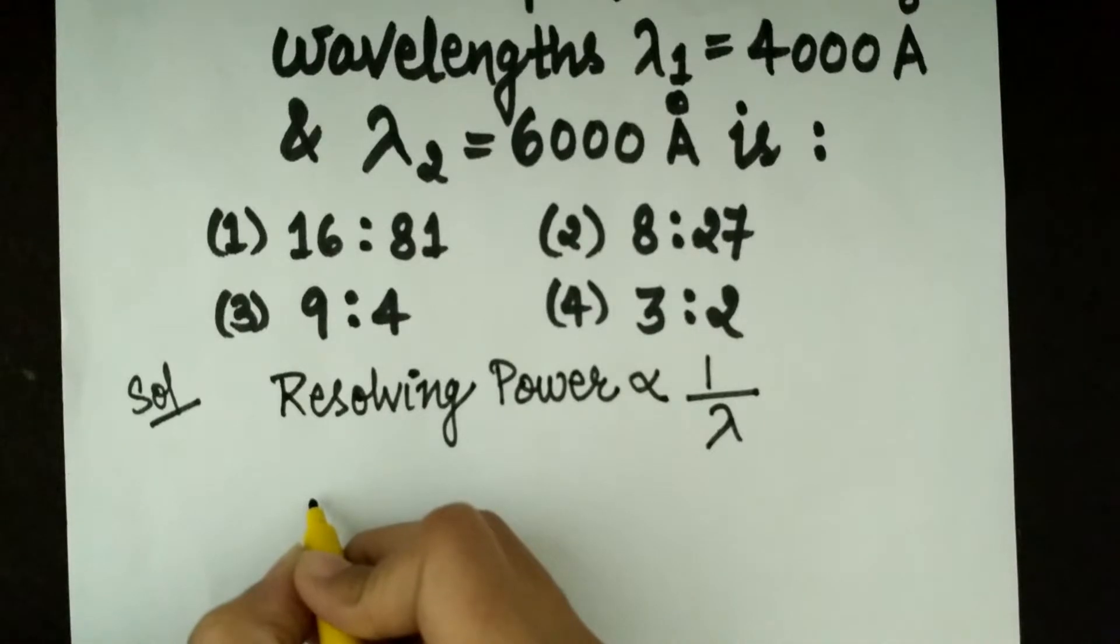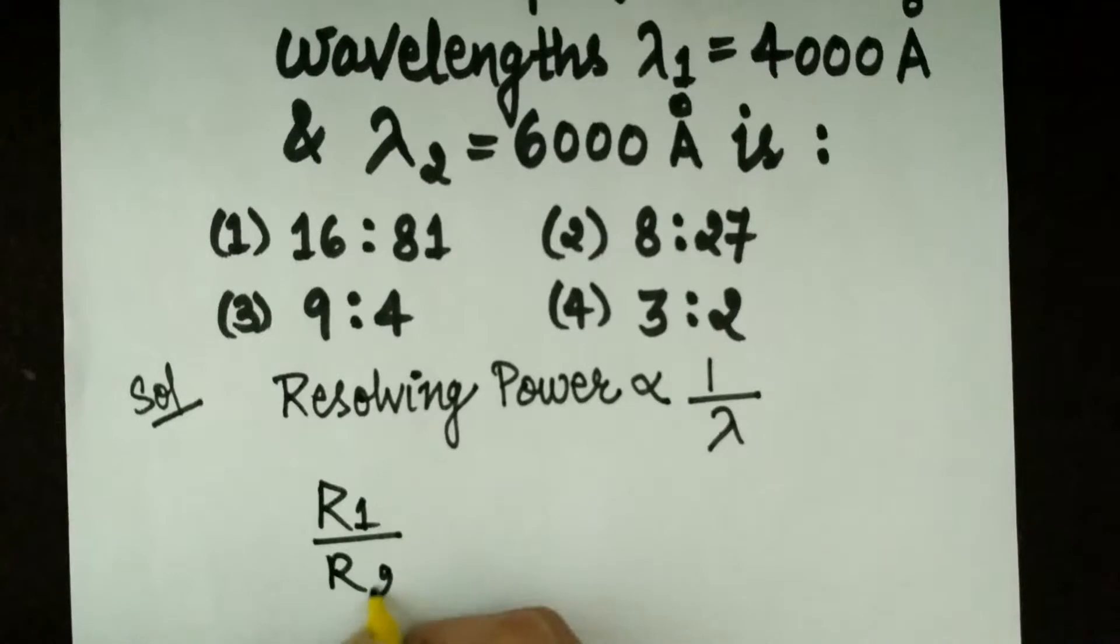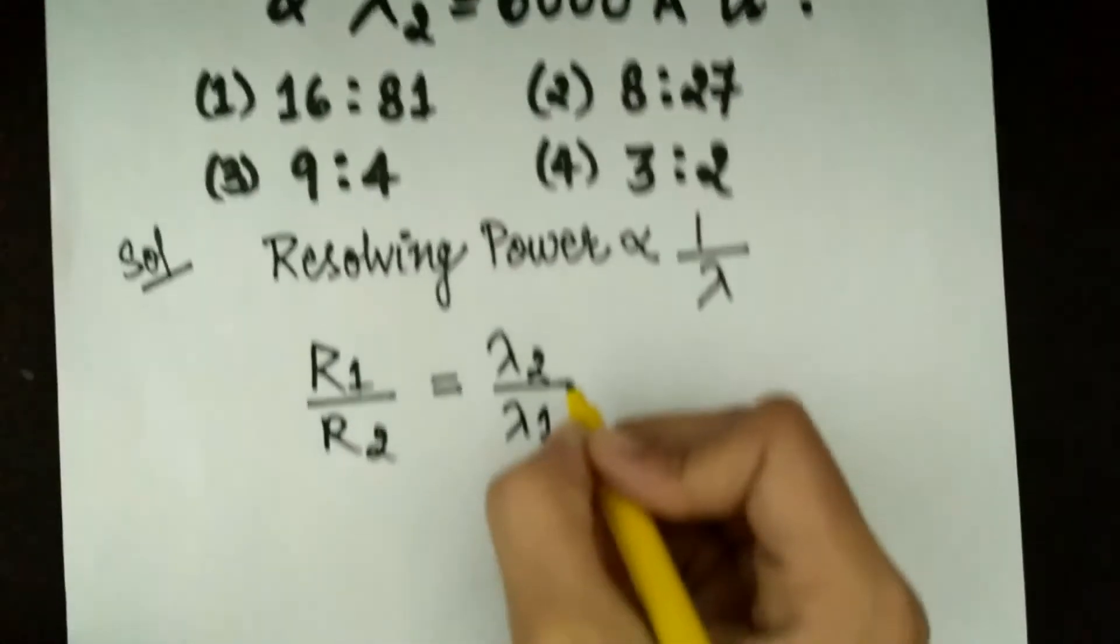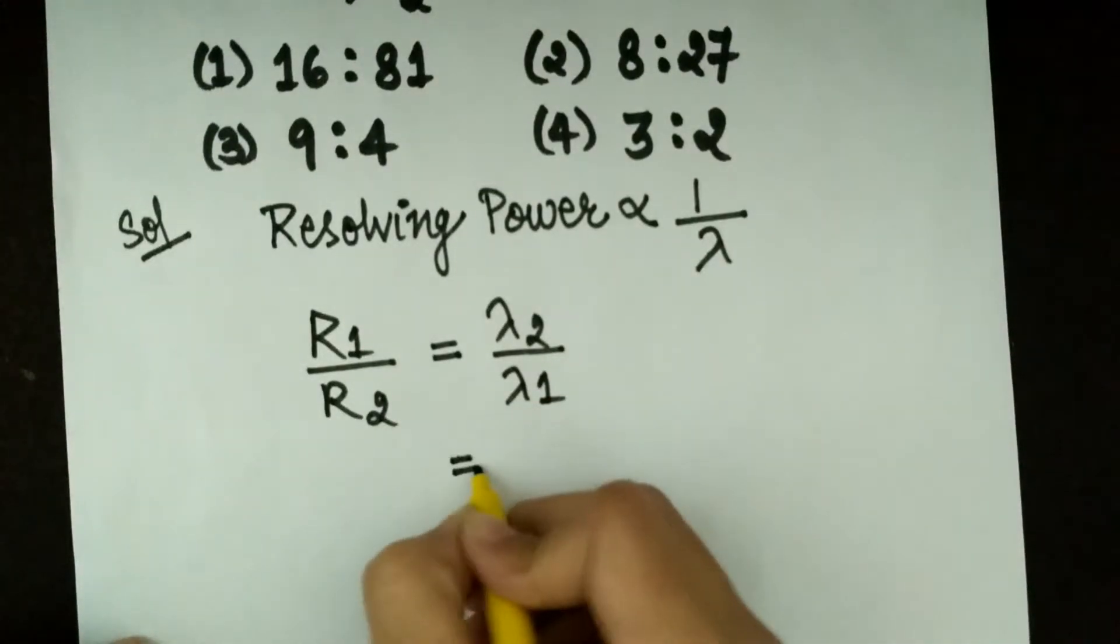So if we take resolving power as R, then R1 upon R2 equals lambda 2 upon lambda 1. Put the values for lambda 2 and lambda 1.